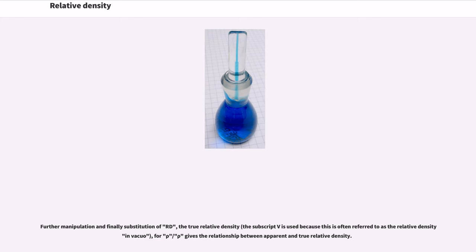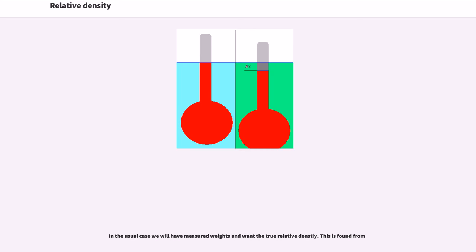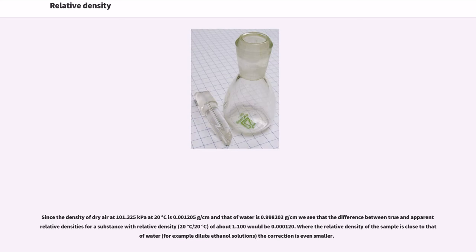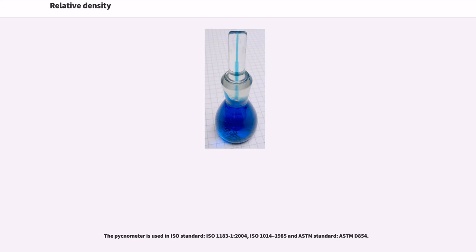Further manipulation gives the relationship between apparent and true relative density. The true relative density (subscript V, often referred to as relative density in vacuo) can be found from the apparent relative density. Since the density of dry air at 101.325 kPa at 20°C is 0.001205 g/cm³ and that of water is 0.998203 g/cm³, the difference between true and apparent relative densities for a substance with RD of about 1.100 would be 0.000120. Where the relative density of the sample is close to that of water — for example dilute ethanol solutions — the correction is even smaller. The pycnometer is used in ISO standards ISO 1183-1 (2004), ISO 1014 (1985), and ASTM standard ASTM D-854.